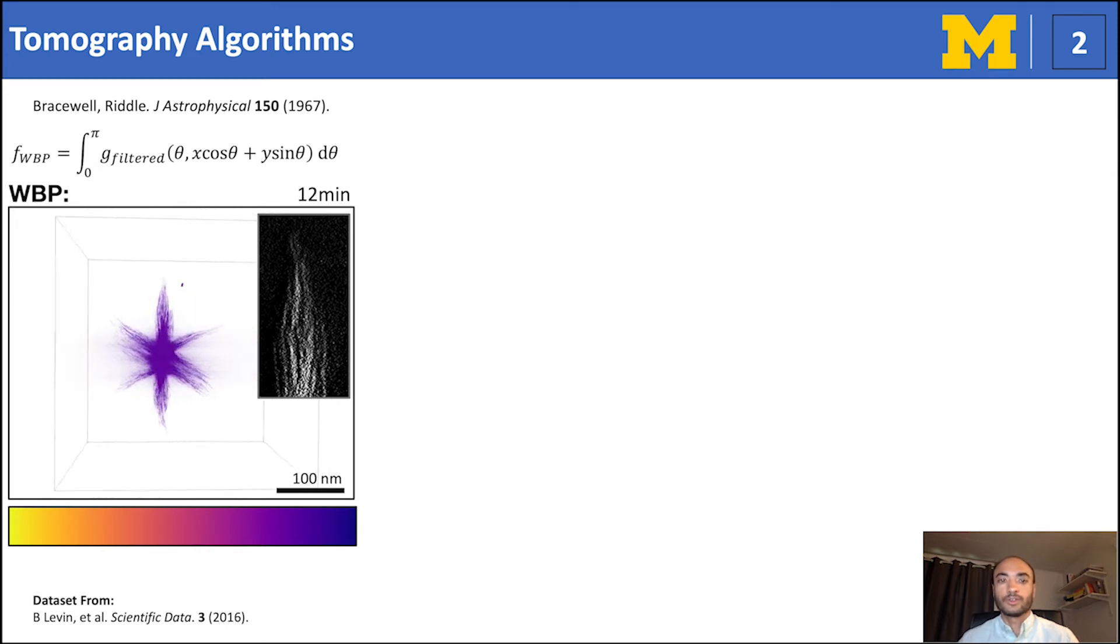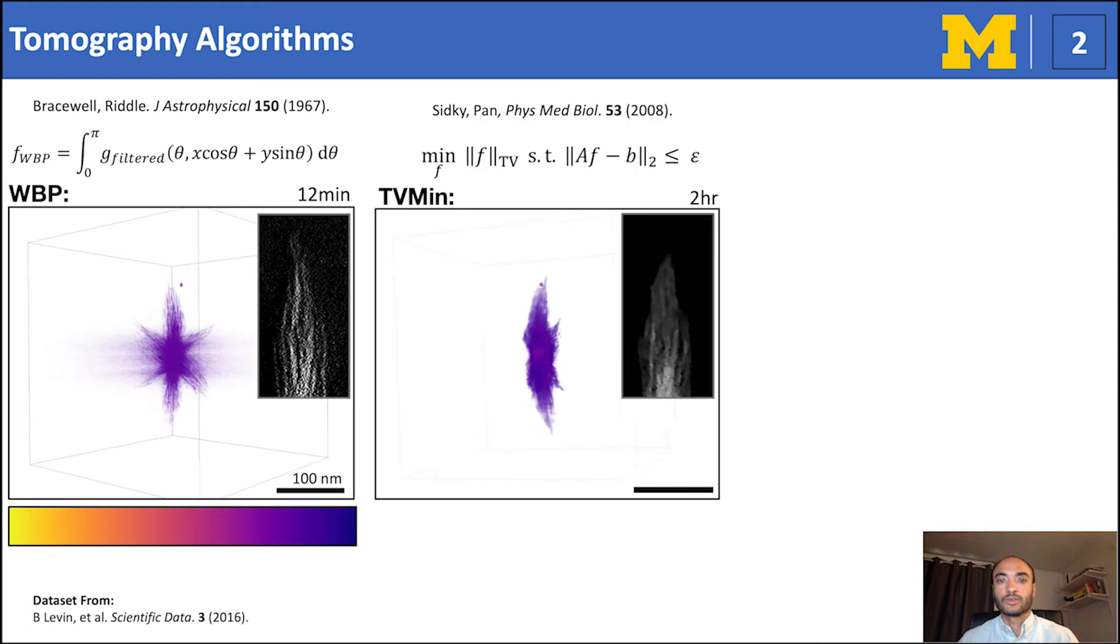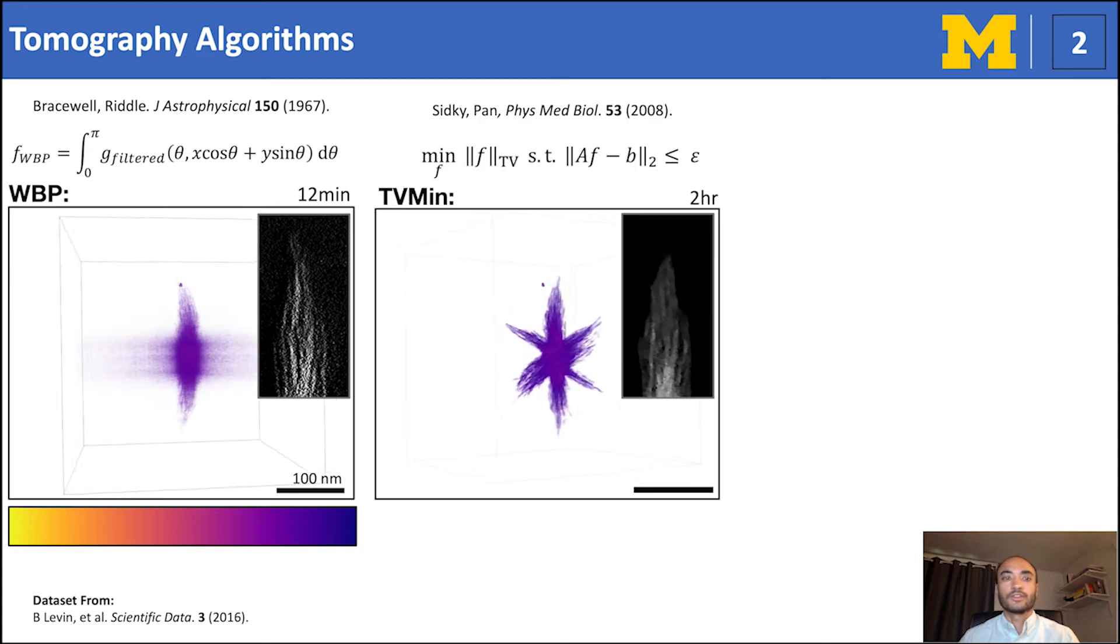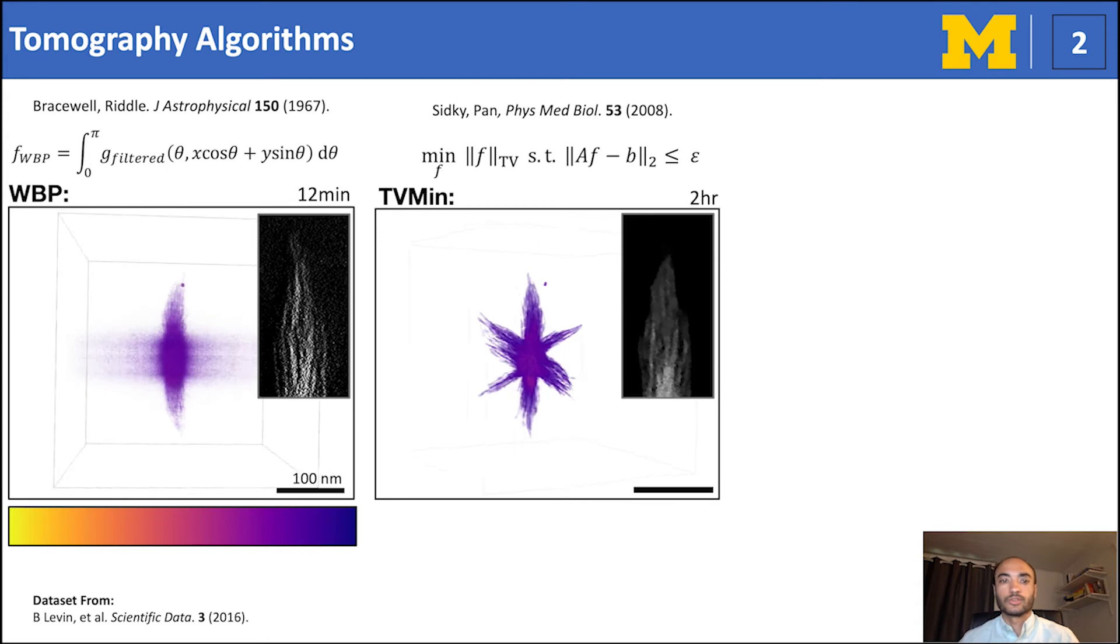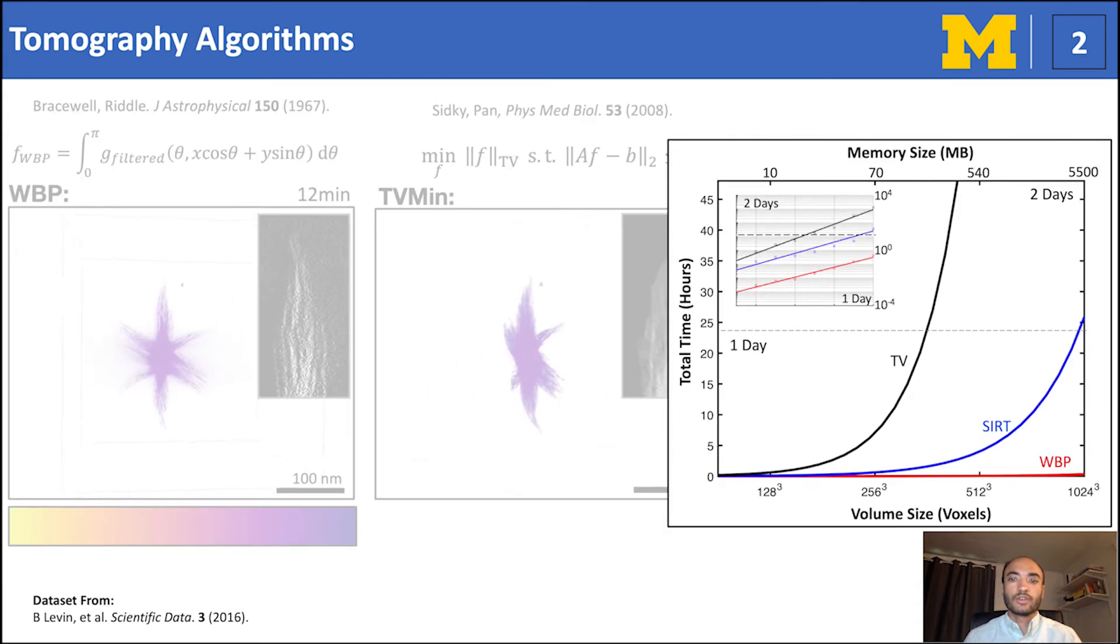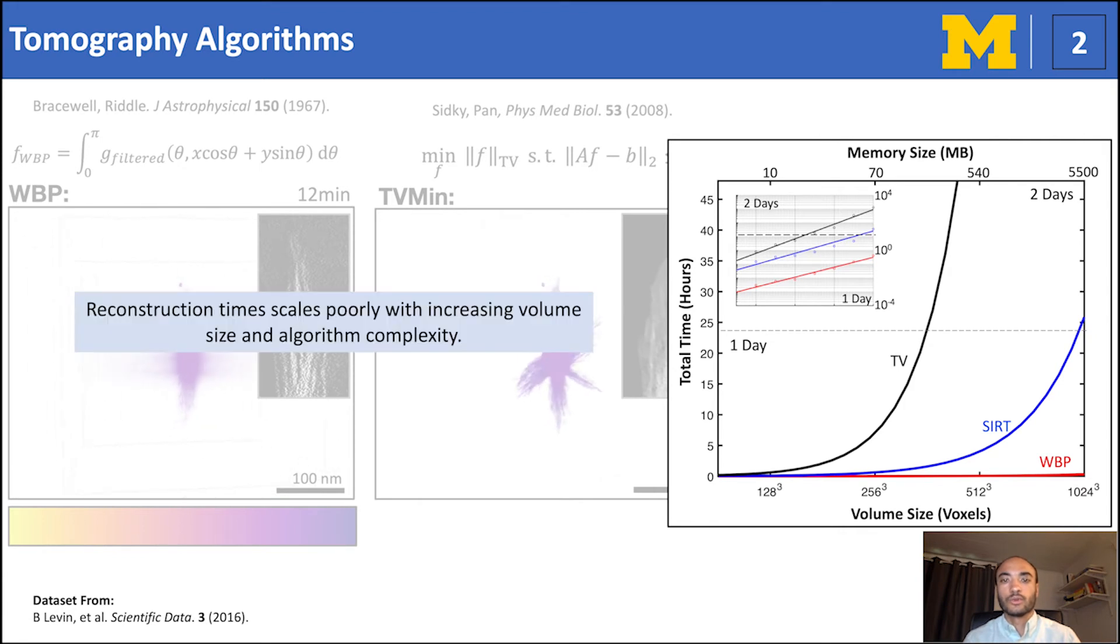Alternatively, iterative methods inspired by compressed sensing, such as total variation minimization, is an ideal approach for solving under-determined systems as they produce regularized solutions for under-sampled data. TvMin outperforms weighted back projection by recovering the full structure and removes speckle noise. However, the times for these reconstruction algorithms will quickly scale as the volume size grow, and will likely need to run multiple times in order to determine optimal parameters.